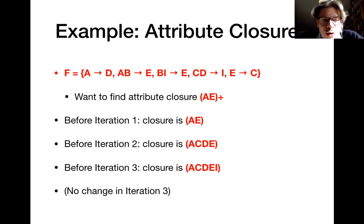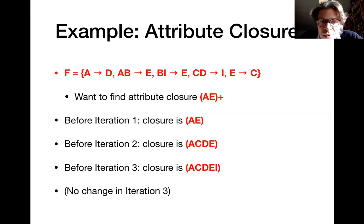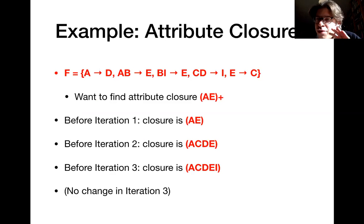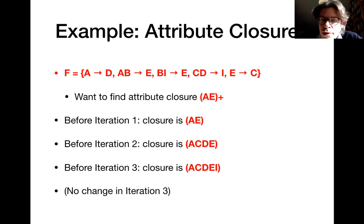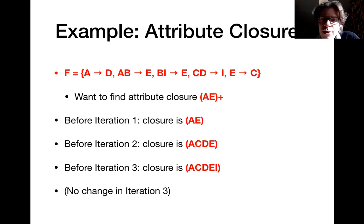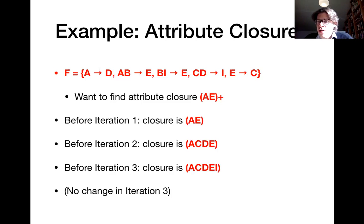Let's make an example to make things more concrete. We have the functional dependencies in F given at the top of the slide, and we want to calculate the attribute closure of the attribute set A and E — represented as (A,E)+. In the first iteration, we start with exactly this set of attributes A and E. After iterating over the functional dependencies, we will expand that set by adding attributes C and D. Looking at the first functional dependency, it states that if you know the value for attribute A, you can infer the value for attribute D. Since we know A, we can infer D.